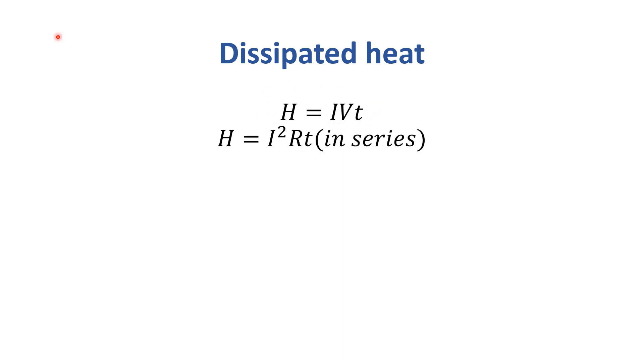For series, again I squared RT. For parallel, V squared over R times T, which equals V squared T over R.